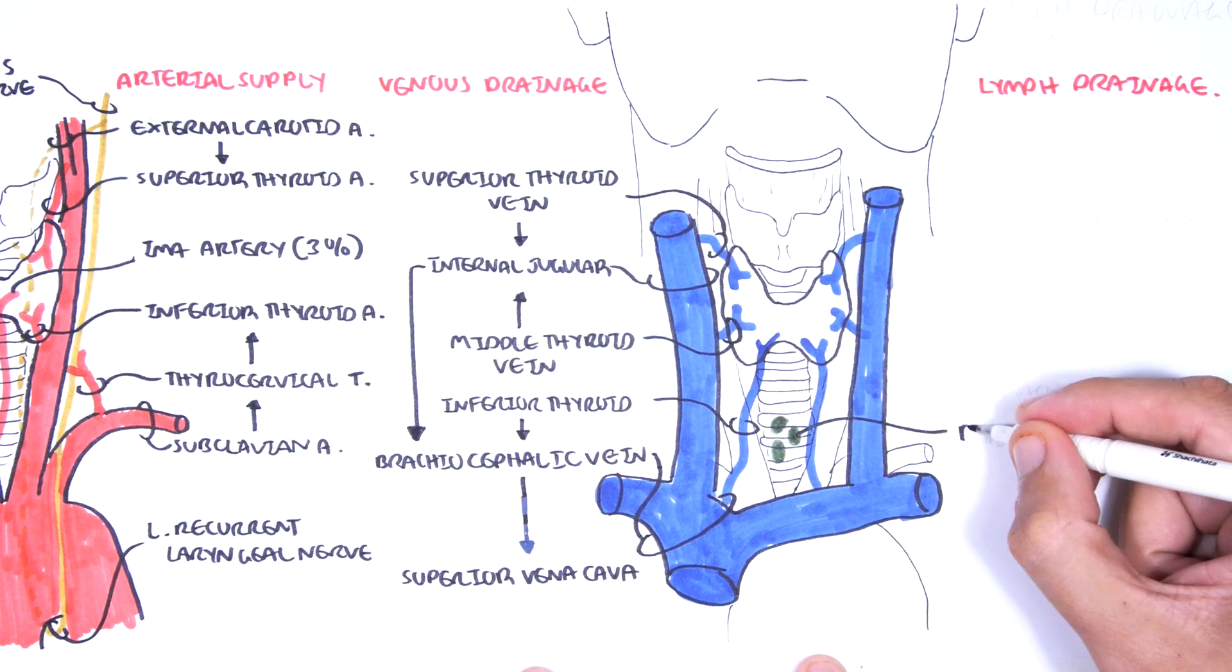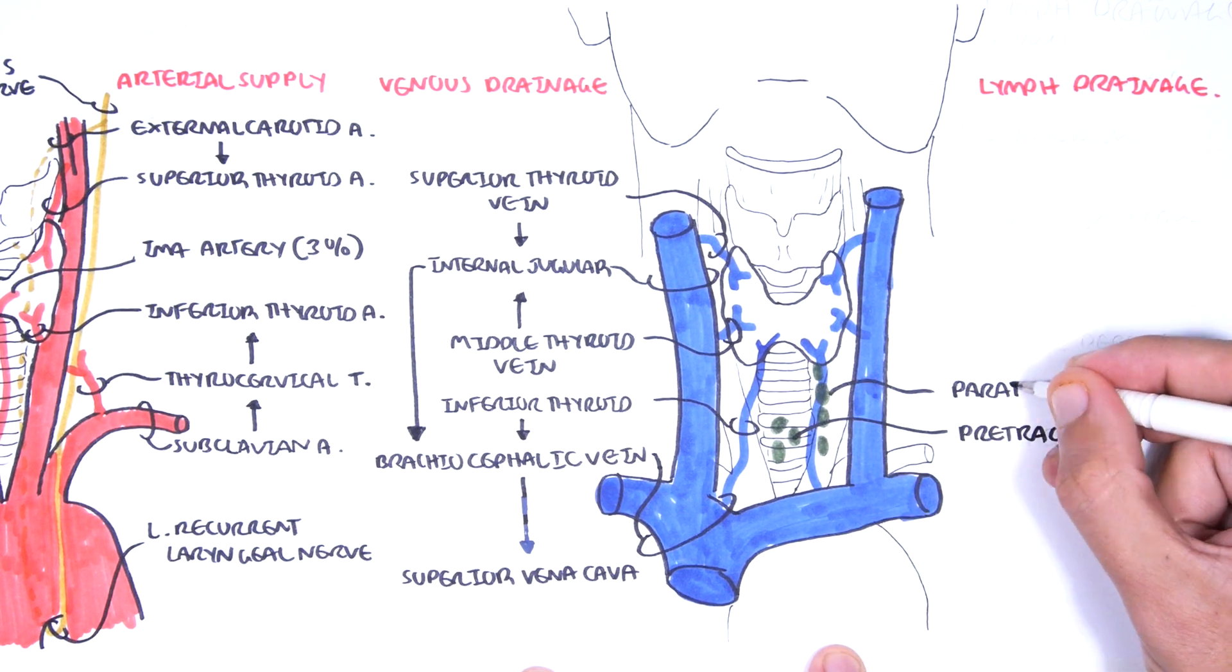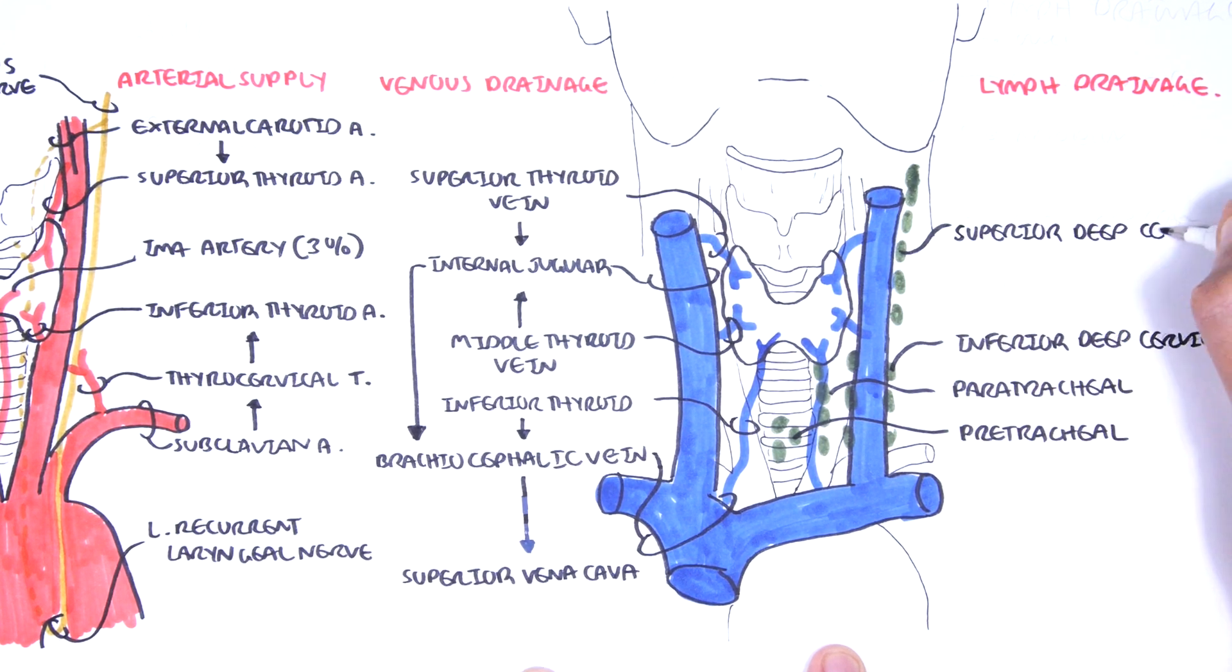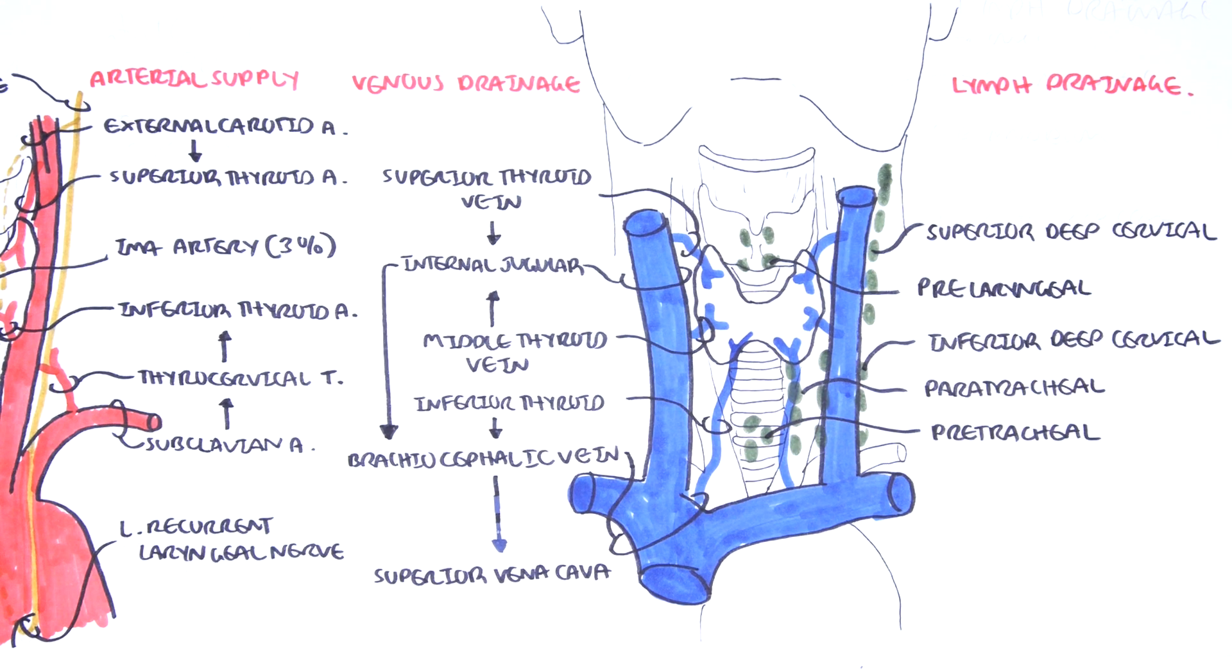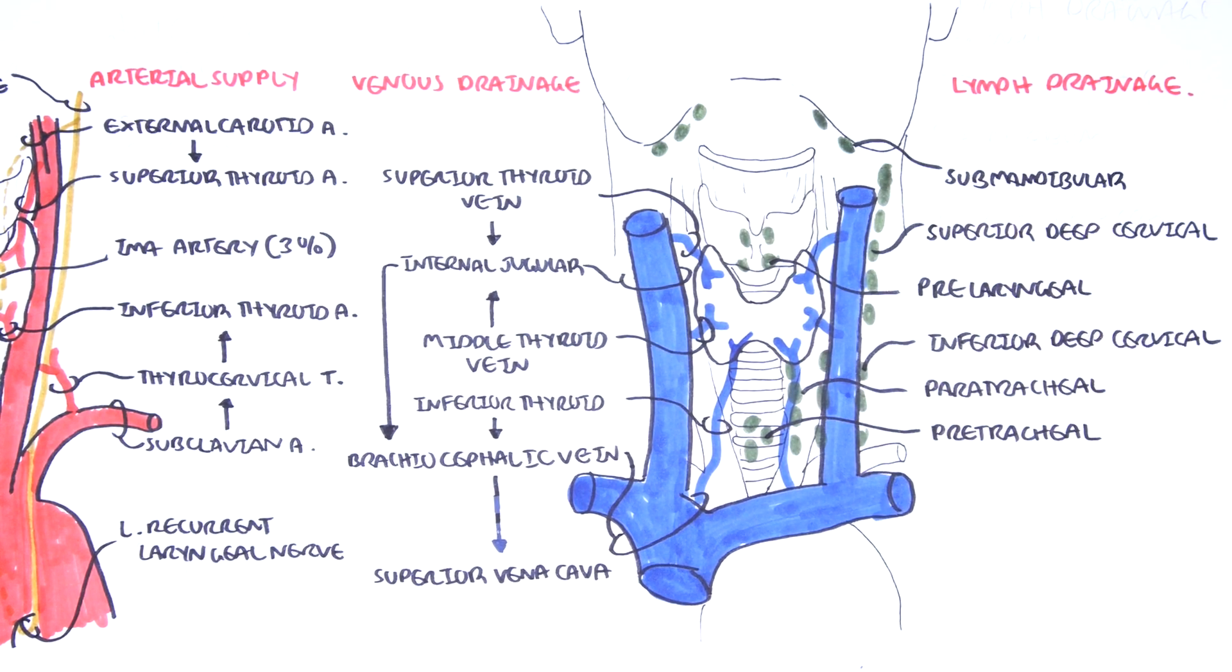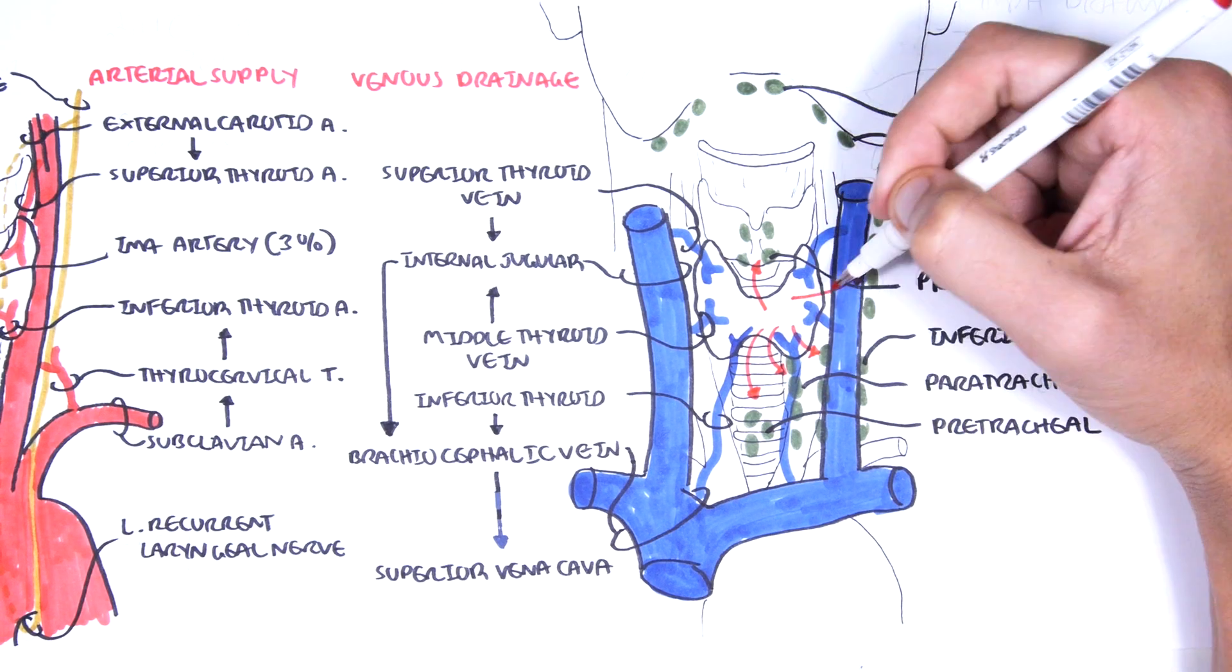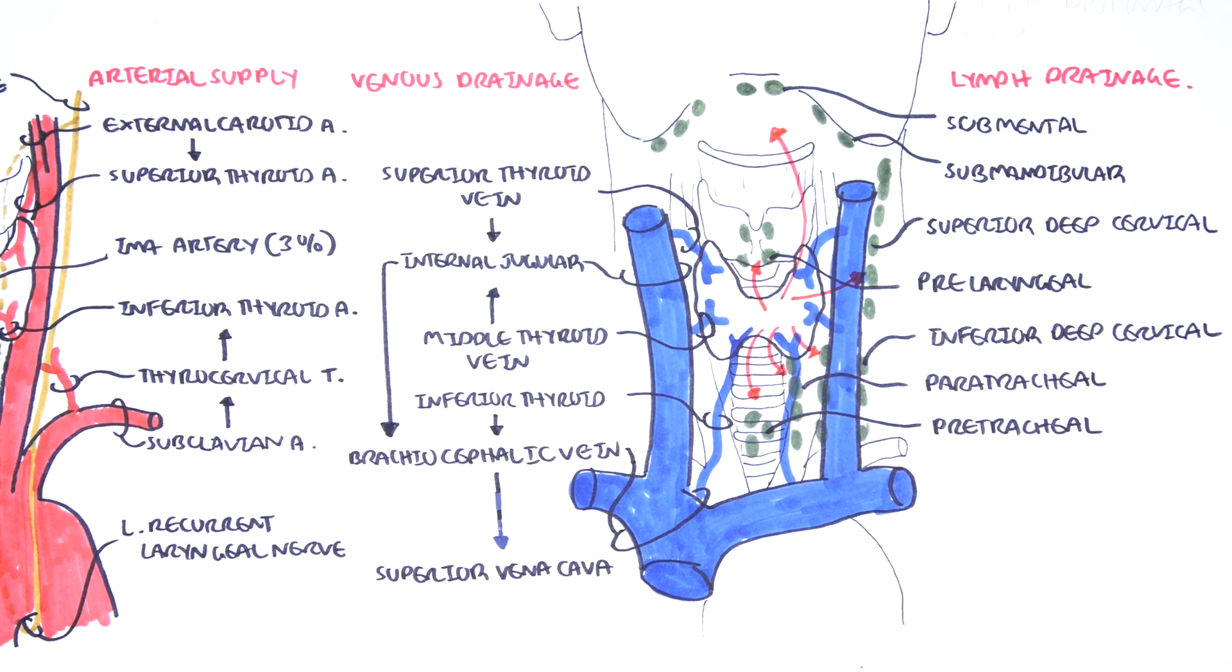The thyroid lymphatic drainage drains into the pretracheal lymph nodes, the paratracheal lymph nodes, the inferior deep cervical lymph nodes, the superior deep cervical lymph nodes, the pre-laryngeal lymph nodes, and even up to the submandibular and submental lymph nodes. The nodes are important as cancer from the thyroid gland can move to these lymph nodes.